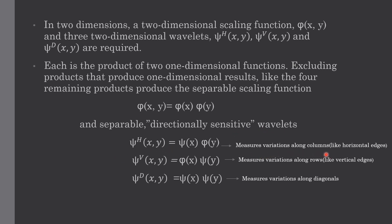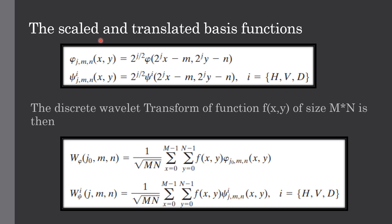Psi h detects the horizontal edges, psi v measures the variations along rows. The scaled and translated basis functions of the diagonals and a 2D wavelet transform can be given like this.